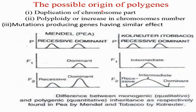The possible origins of polygenes depend on duplication of chromosome parts, polyploidy or increase in chromosome number, and mutation producing genes with similar effects. Now let's look at the difference between monogenic inheritance, which is qualitative, and polygenic inheritance, which is quantitative.